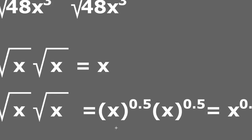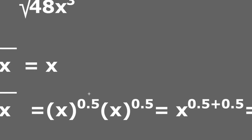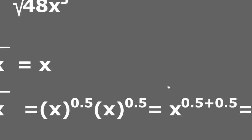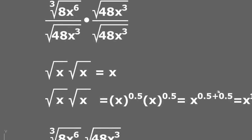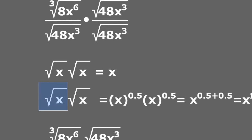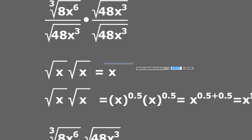When I have the multiplication of two numbers with the same base, I keep the same base and add the values of the exponents. Here we have one half plus one half — 0.5 plus 0.5 — that equals x raised to the power of 1, which is simply x. So in this explanation we see why the multiplication of the square root of x by the square root of x equals just x.